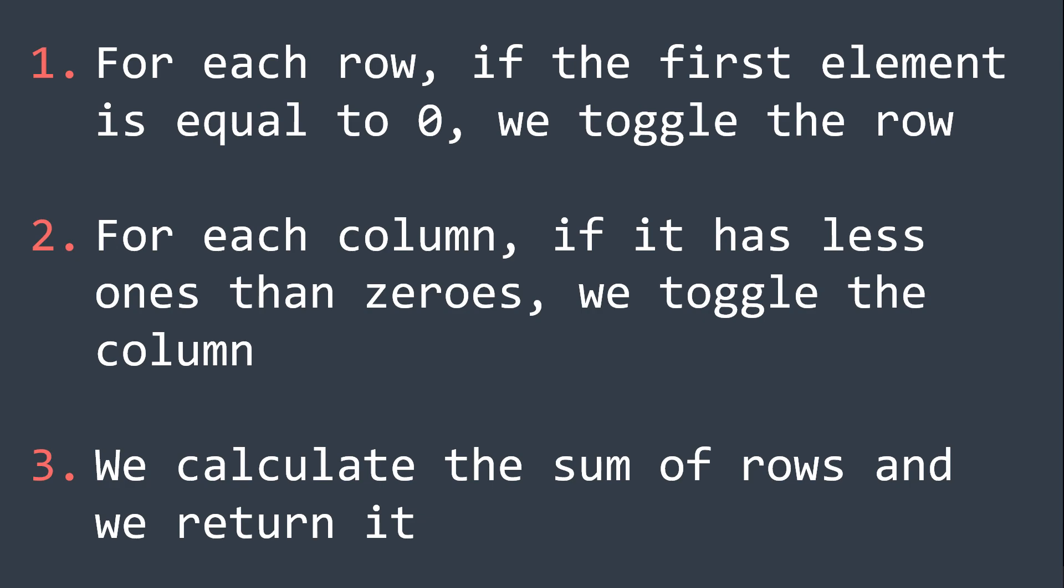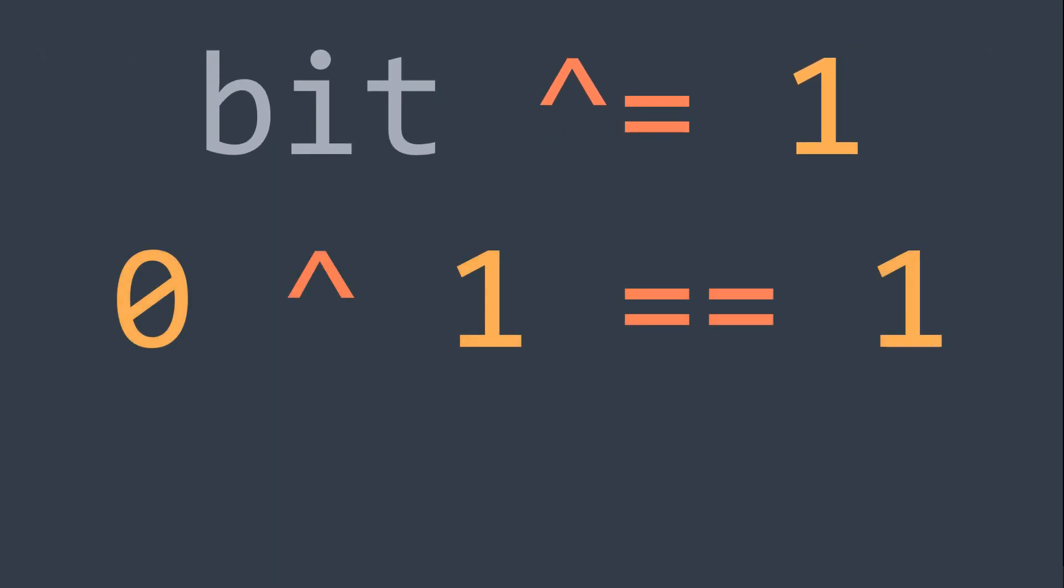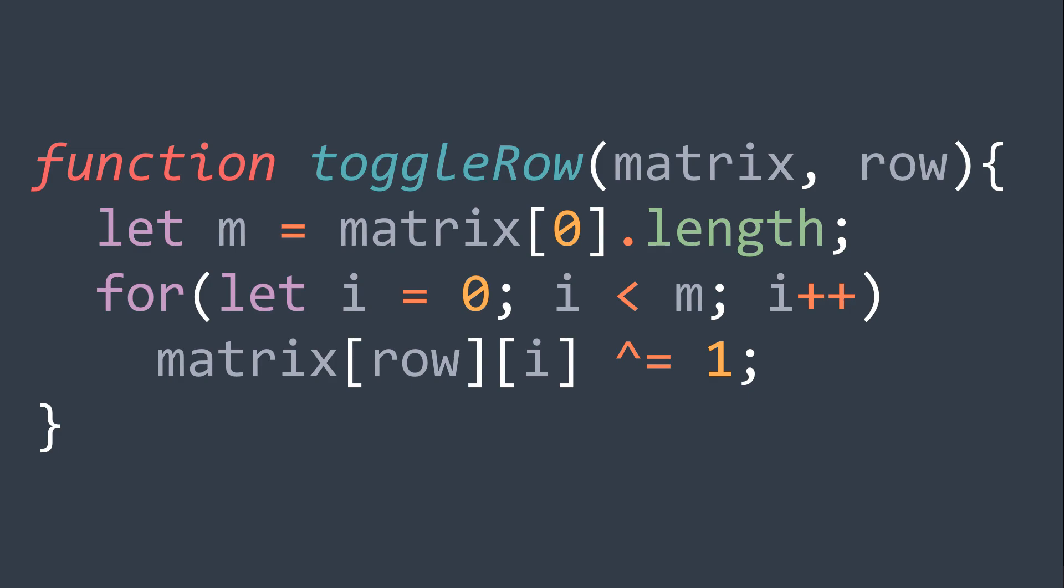But you can see that we need three additional functions, one to toggle a row, one to check if a column has less ones than zeros, and one to toggle a column, let's see their code in JavaScript. First of all, you need to know that to toggle a bit, we can XOR it with one, because zero XOR 1 is one, and one XOR 1 is zero. So to toggle a row at the index row, for each index i in the row, matrix of row i becomes equal to matrix of row i XOR 1, that's it.